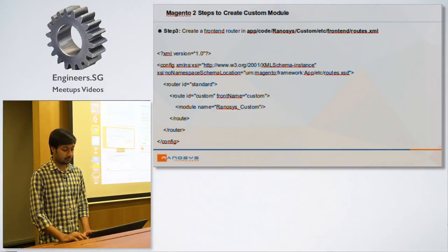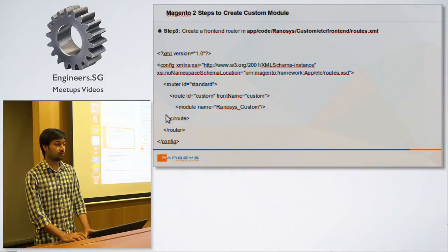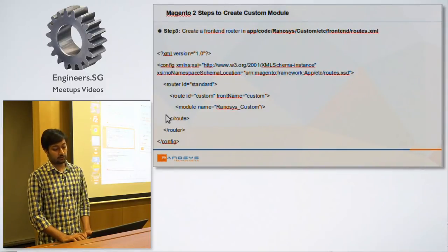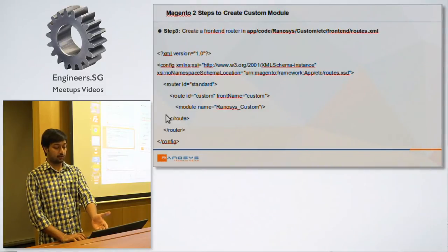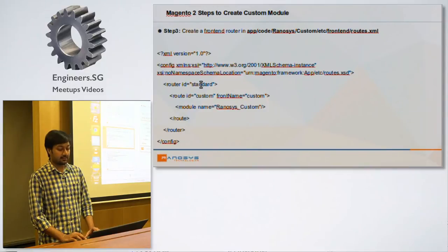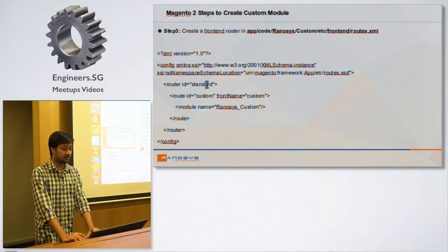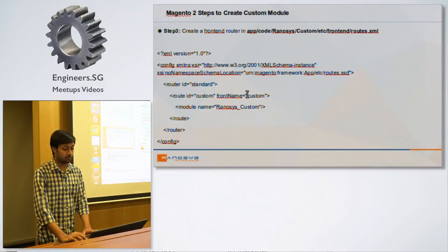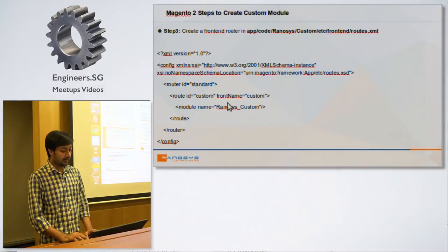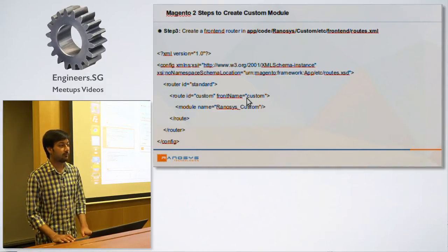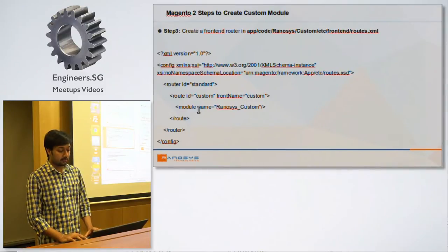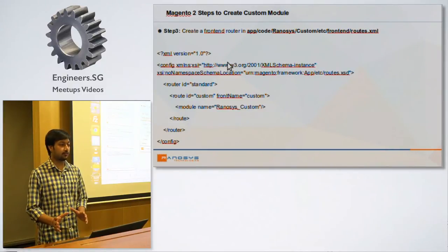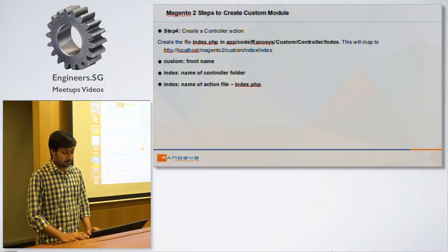In Magento 1 routes were defined in config.xml for both frontend and backend. In Magento 2 they go in routes.xml under the etc folder. The route types are the same: standard for frontend, admin for backend, CMS for CMS pages, and default. You define a route ID, a route name (typically your module name), and the module name like Ranosys_Custom. This file is basically for routing, controlling what appears in the URL.